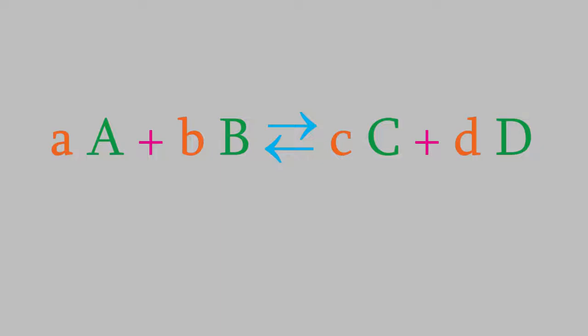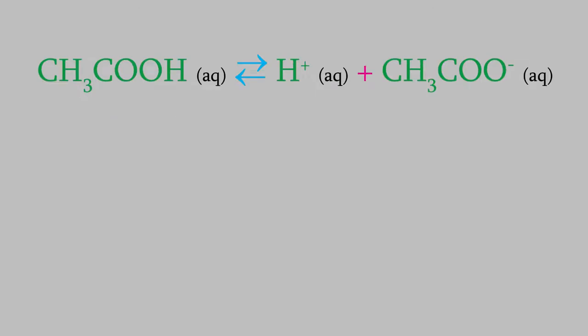For example, suppose we have this reaction in which acetic acid dissociates to form hydrogen ions and acetate ions. It's a reversible reaction and the equilibrium constant has a value of 1.8 times 10 to the minus 5.